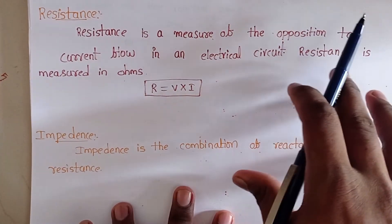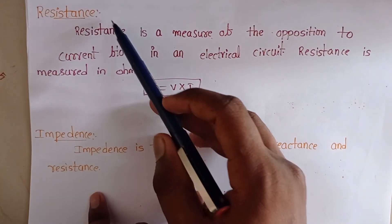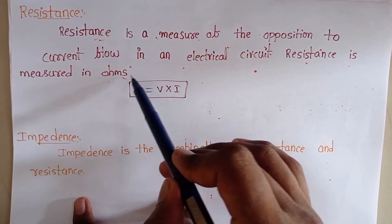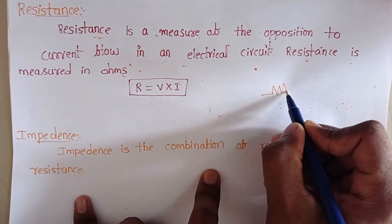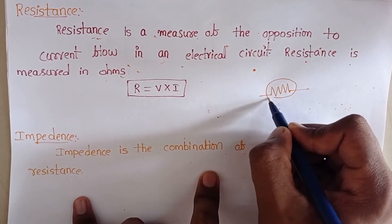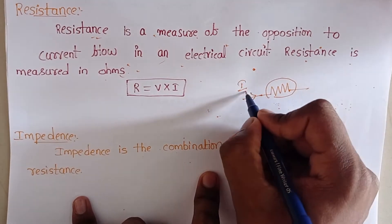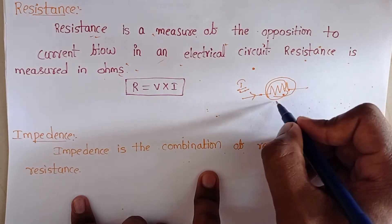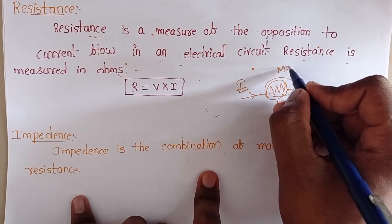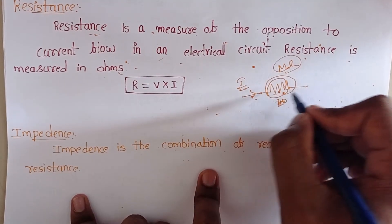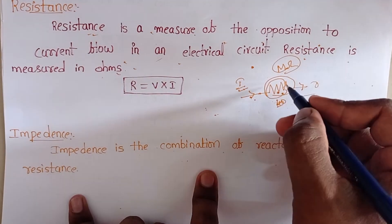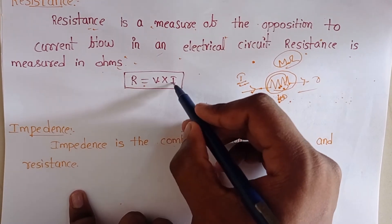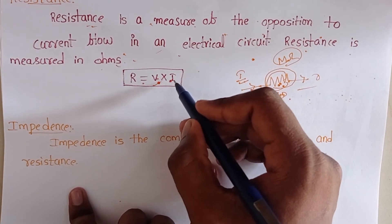Resistance is nothing but the opposing nature of a current. Resistance is the measure of the opposition to current flow in an electrical circuit, and it is measured in ohms. If we have a resistor in our circuit and apply a current I, this resistance opposes the applied current. If the resistance value is very high — in the megaohm range — then almost zero current flows through that branch. Resistance is found using R = V / I, where V is the voltage across the resistor and I is the current passing through it.